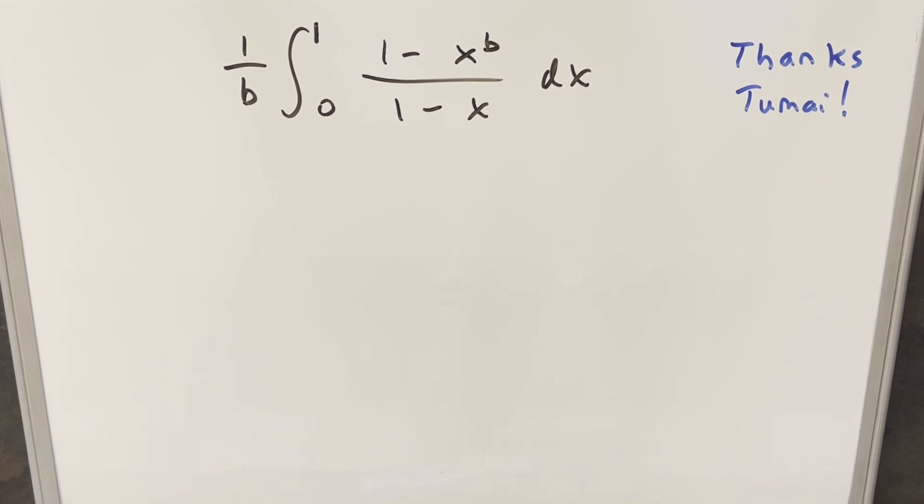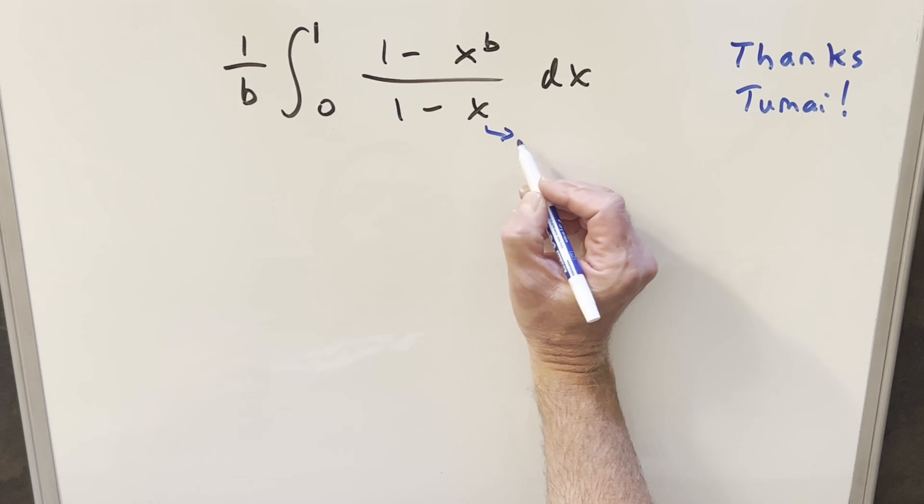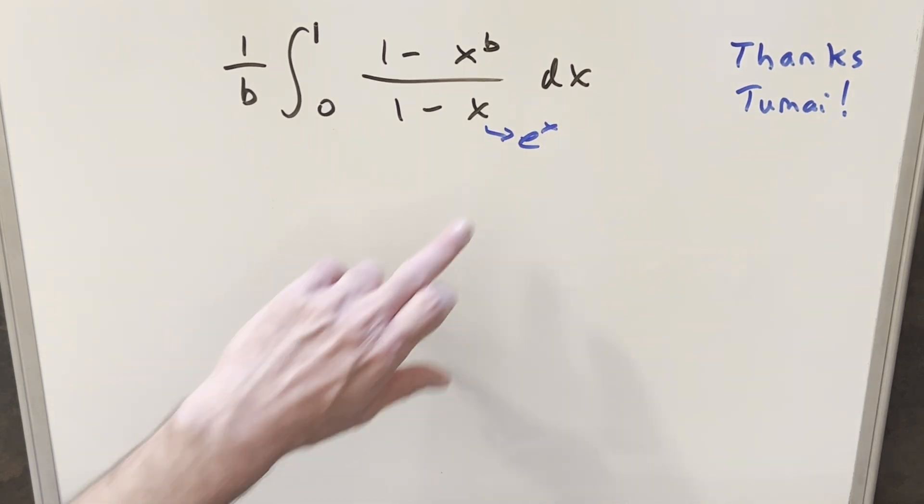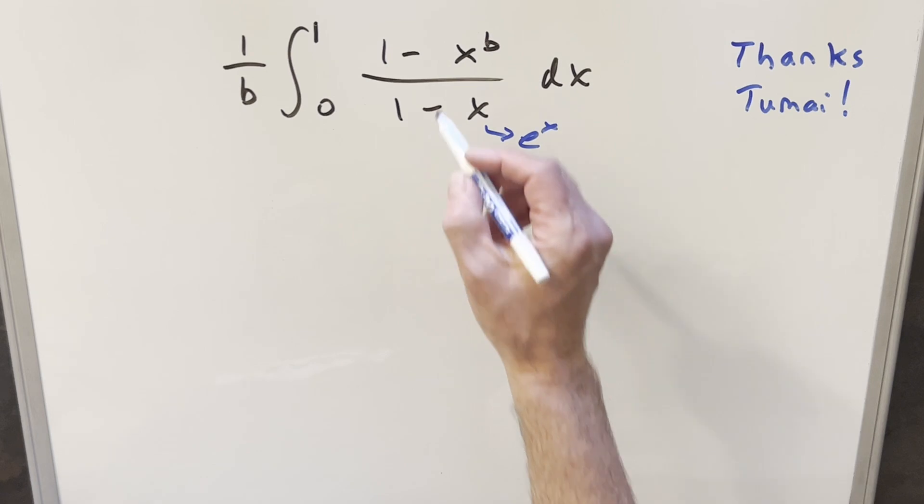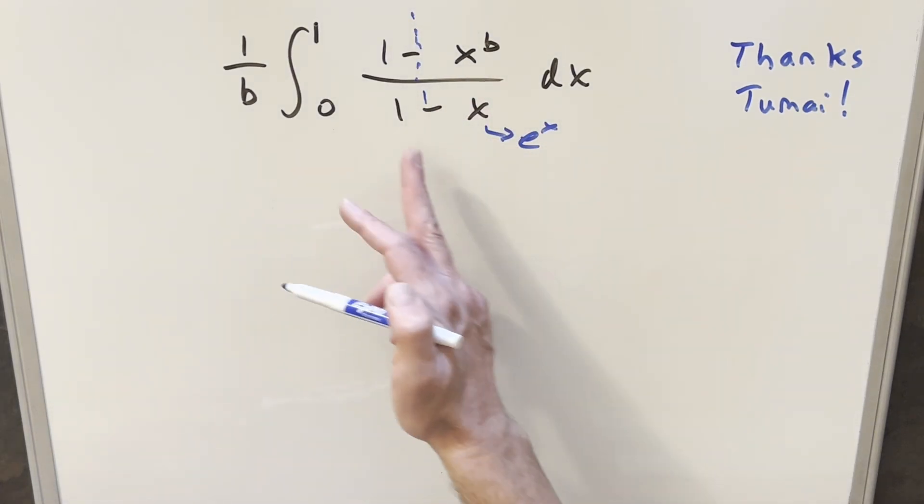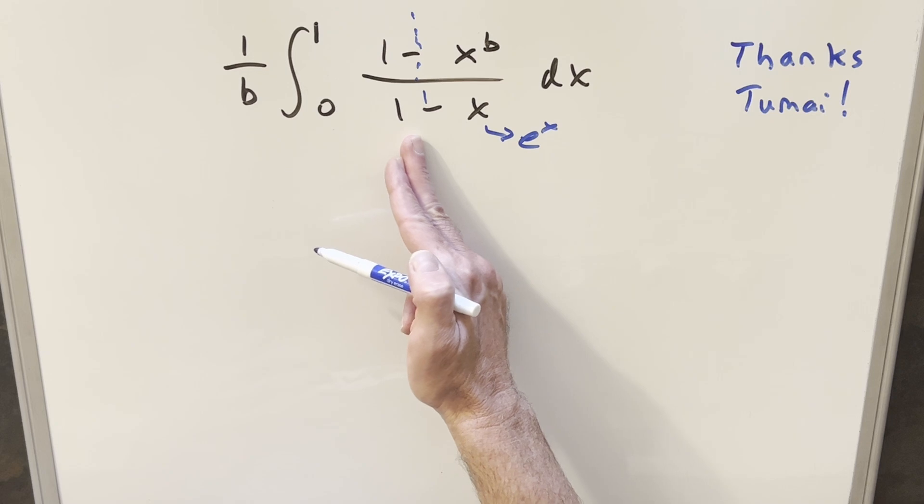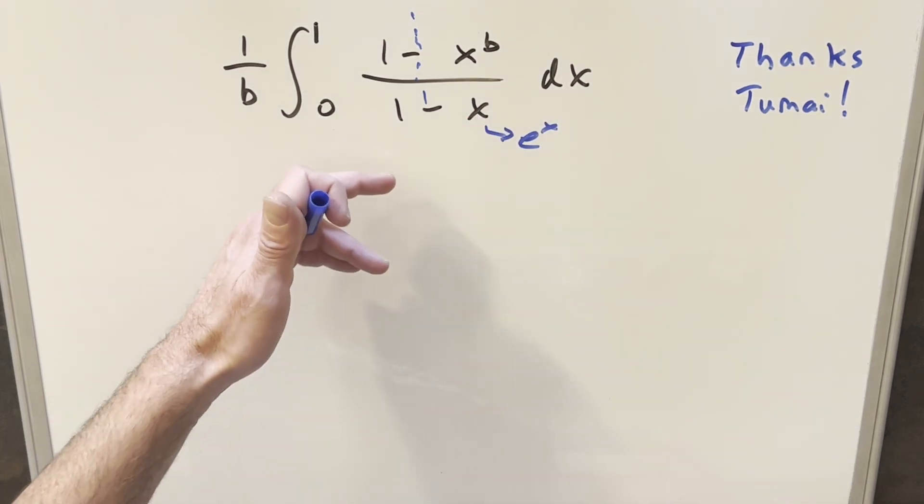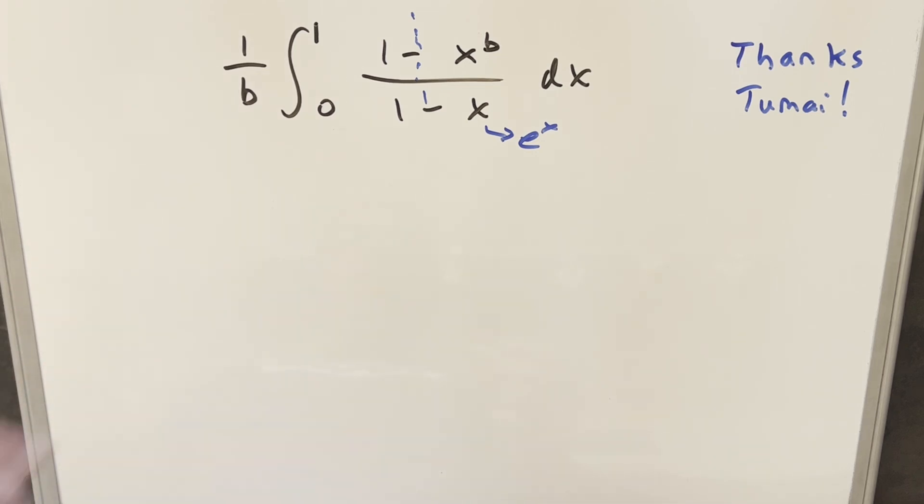At first I didn't think this was a video because I felt like I had done this before. My mistake was I was thinking about when I had e to the x instead of x. That case is different because what I wanted to do is split this in half on the minus sign and create two integrals. One would be 1 over 1 minus x, the other x to the b over 1 minus x. The trouble with doing it that way is that each integral separated like that would be divergent. So that's going to be a problem.